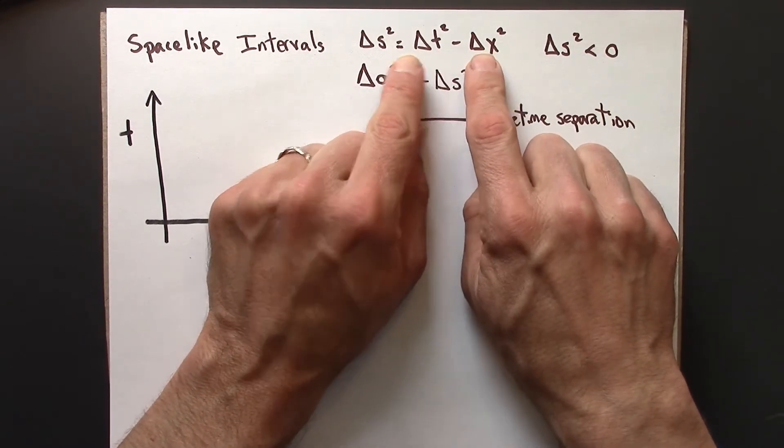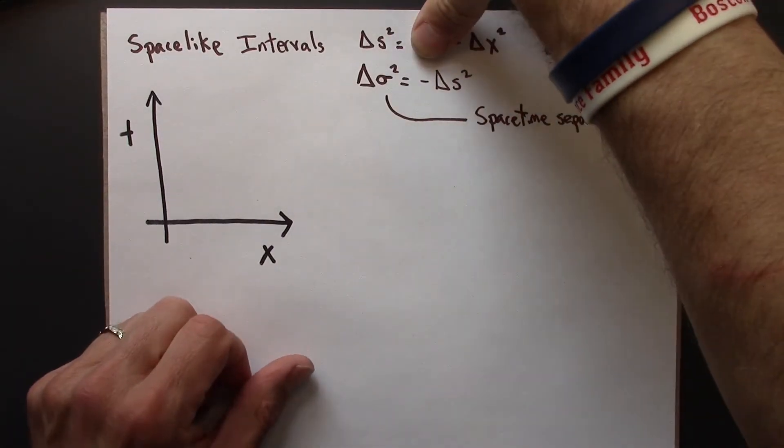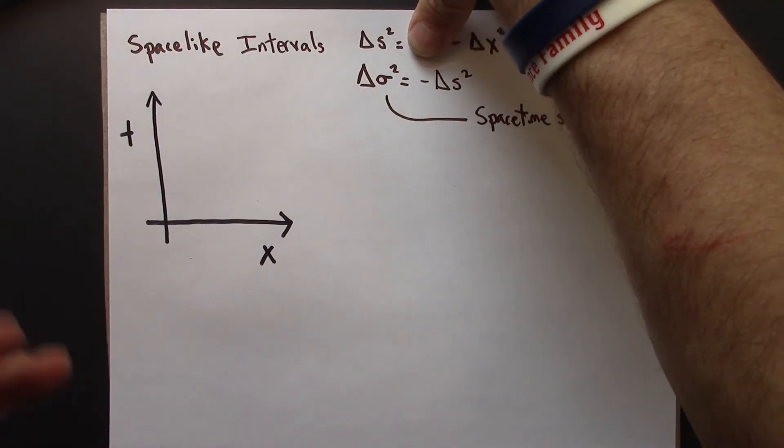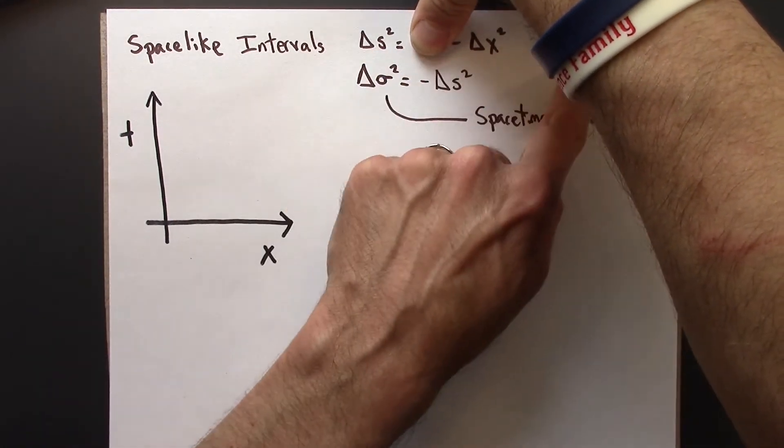So one way this could happen would be if delta t, or delta t squared, if this is zero, then definitely this is negative.